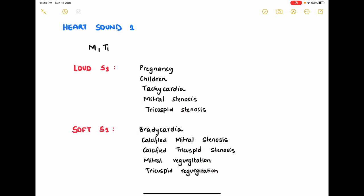Soft S1 are heard in the following conditions: in bradycardia, in calcified mitral stenosis and calcified tricuspid stenosis. If it is non-calcified mitral stenosis and tricuspid stenosis then the S1 is louder. But if it is calcified then the elastic recoil of the valves will be lesser because the calcification interferes with the valve function and thus there is a soft S1 in these conditions. In mitral regurgitation and tricuspid regurgitation because the valves are not closing properly there is a soft S1.